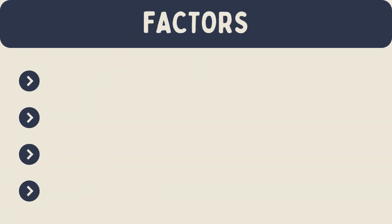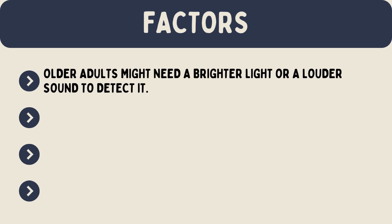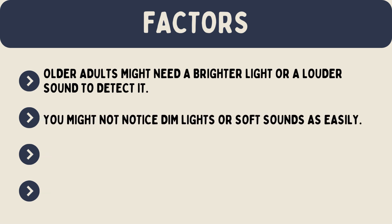Factors affecting absolute threshold — Age: As people age, their absolute thresholds can change. Older adults might need a brighter light or a louder sound to detect it. Fatigue: If you are tired, your absolute thresholds can be higher, and you might not notice dim lights or soft sounds as easily.